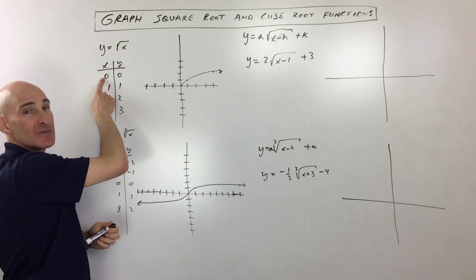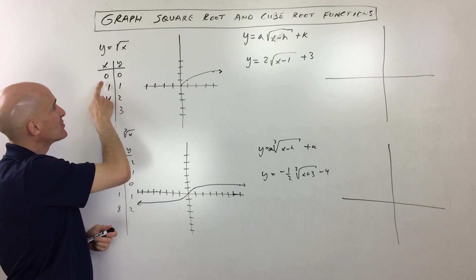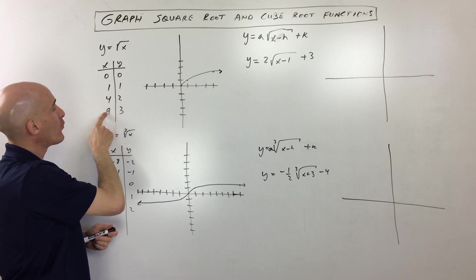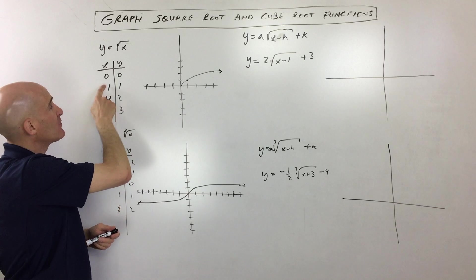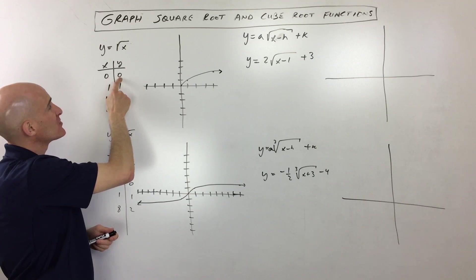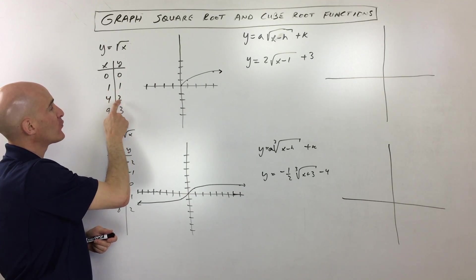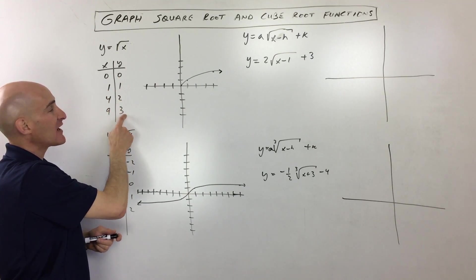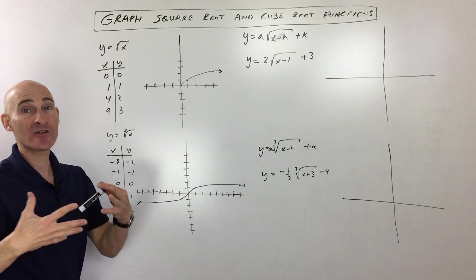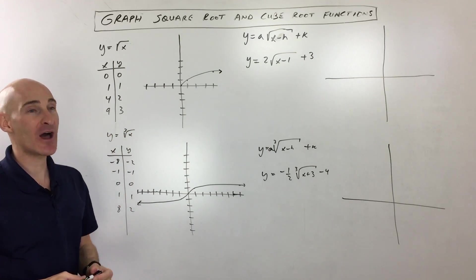What I did here is I picked some easy values — zero, one, four, and nine — because the square root of zero is zero, the square root of one is one, the square root of four is two, the square root of nine is three, so those work out to nice integer values.